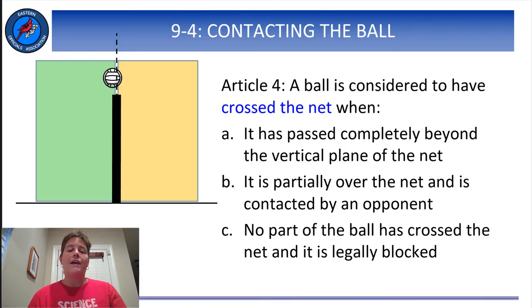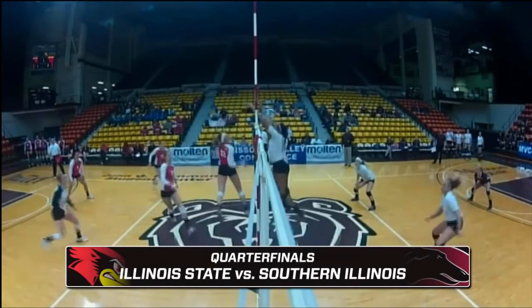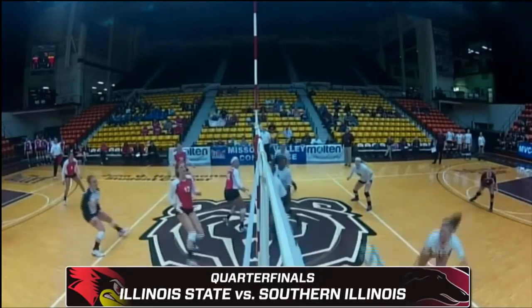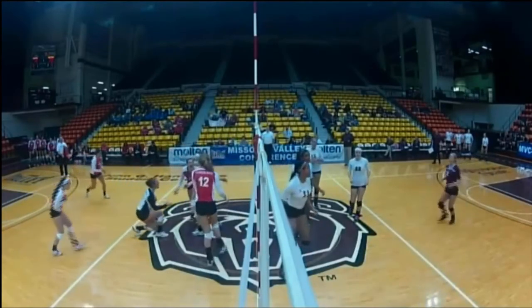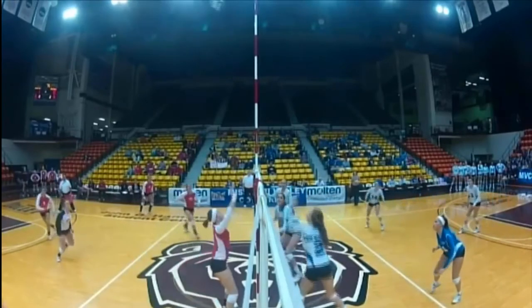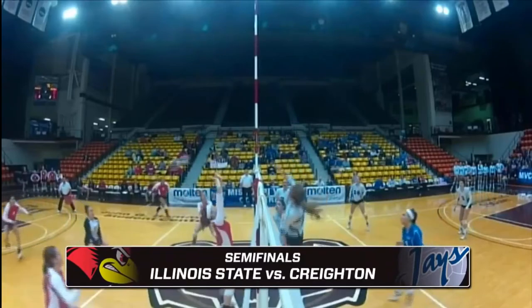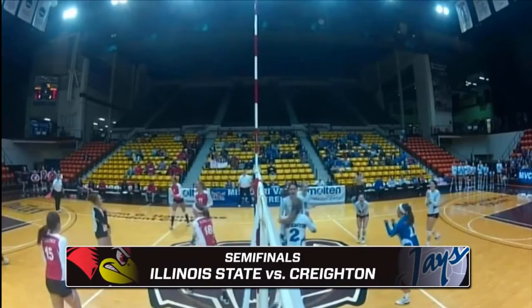Let's take a look at the three ways a ball can be considered to have crossed the net. In Part A of the rule, we'll look for the ball to have completely crossed the plane of the net. You'll see a still frame at the moment that meets that definition. At this point, the entire ball has crossed into the opponent's space, so the ball has crossed the net.